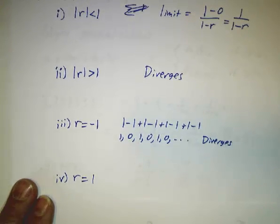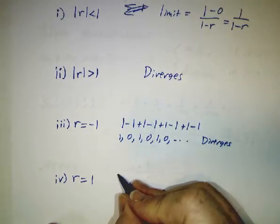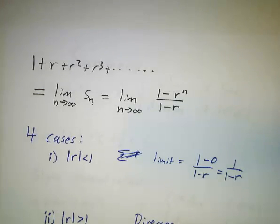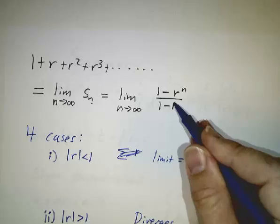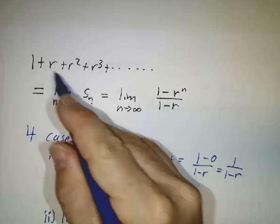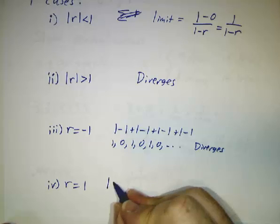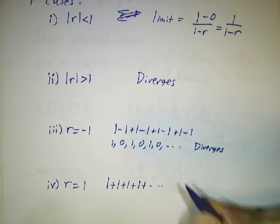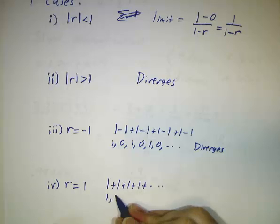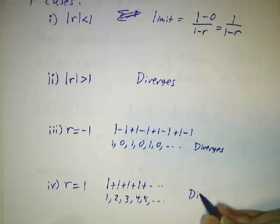Finally, we have the case where r equals 1. The formula doesn't make sense because it divides by 0, so we go back to the original series. When r equals 1, we're talking about 1 plus 1 plus 1 plus 1, and our partial sums are 1, 2, 3, 4, 5 — and of course that diverges.